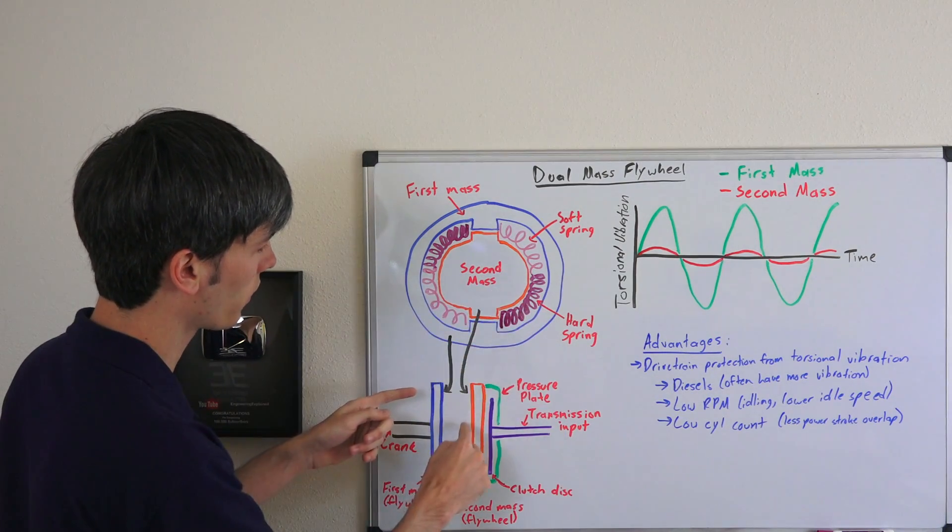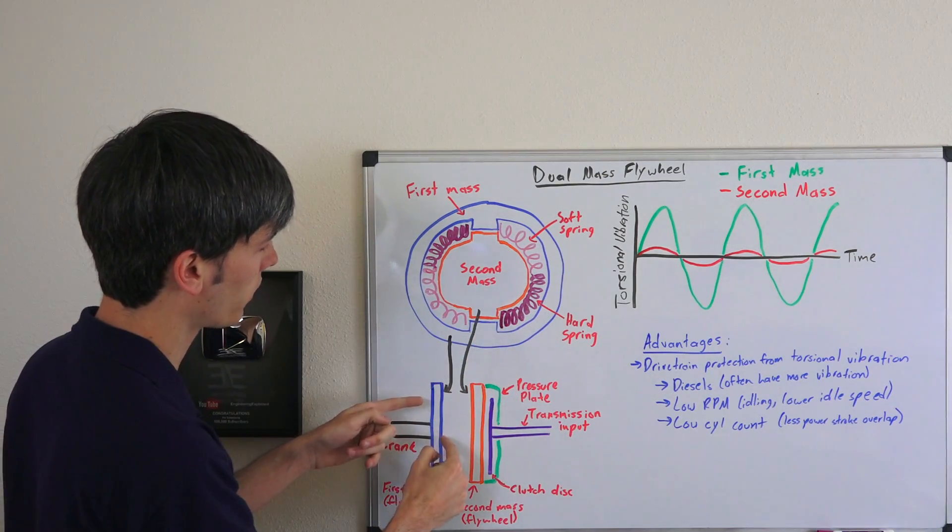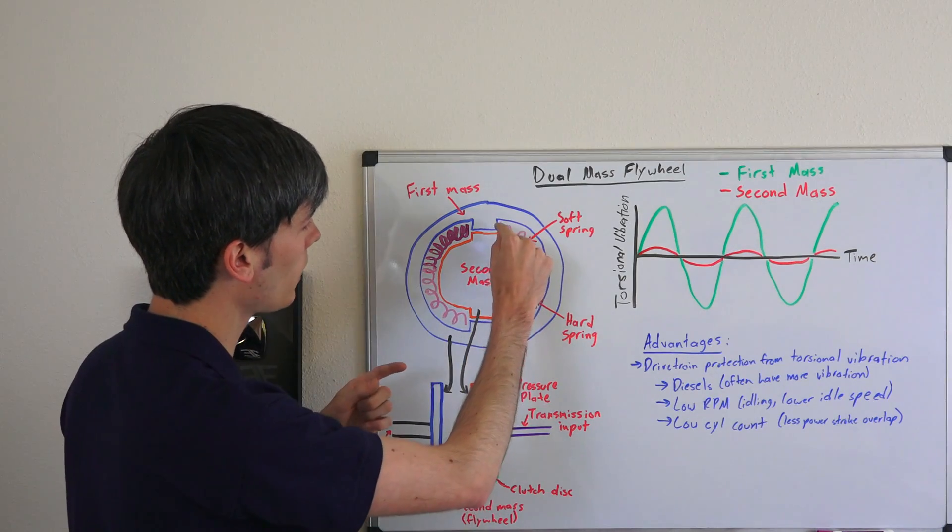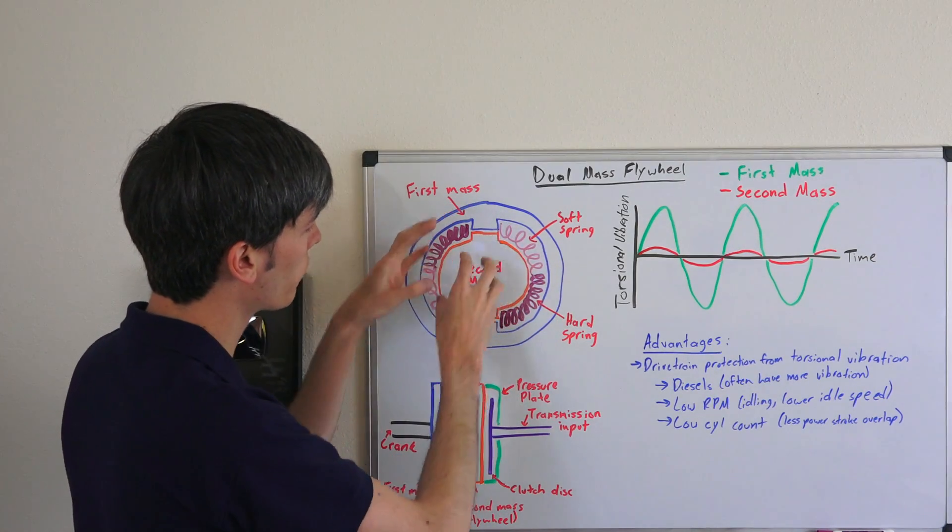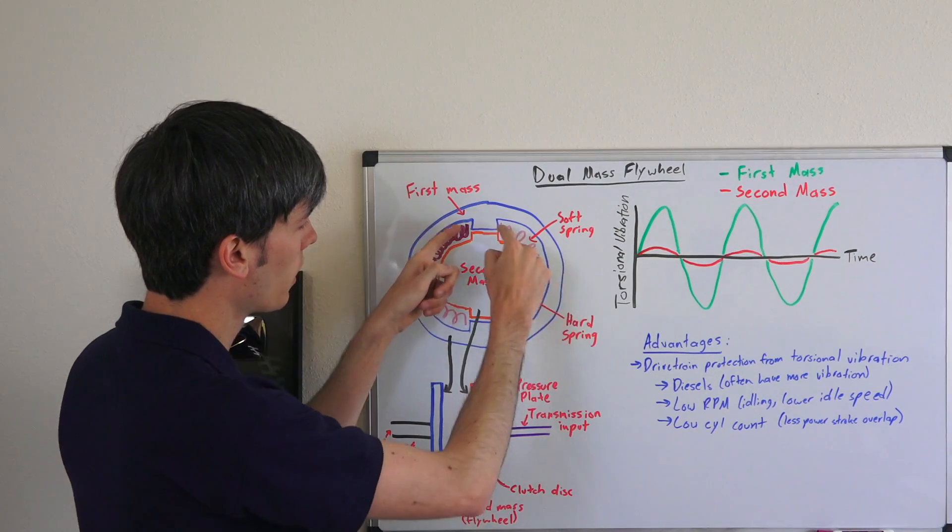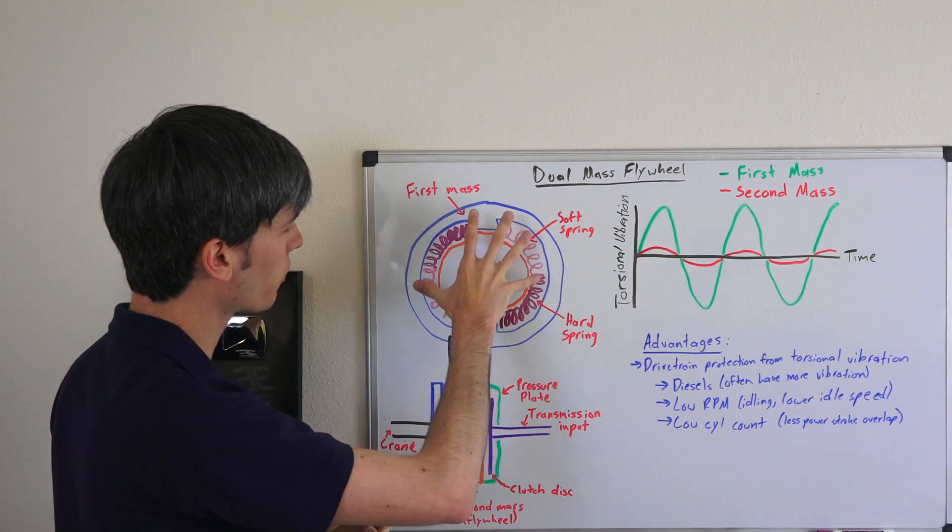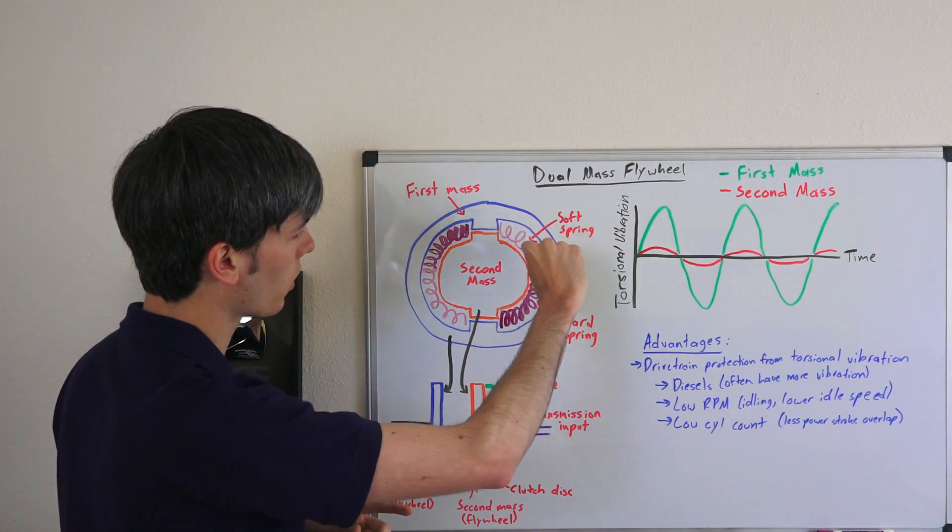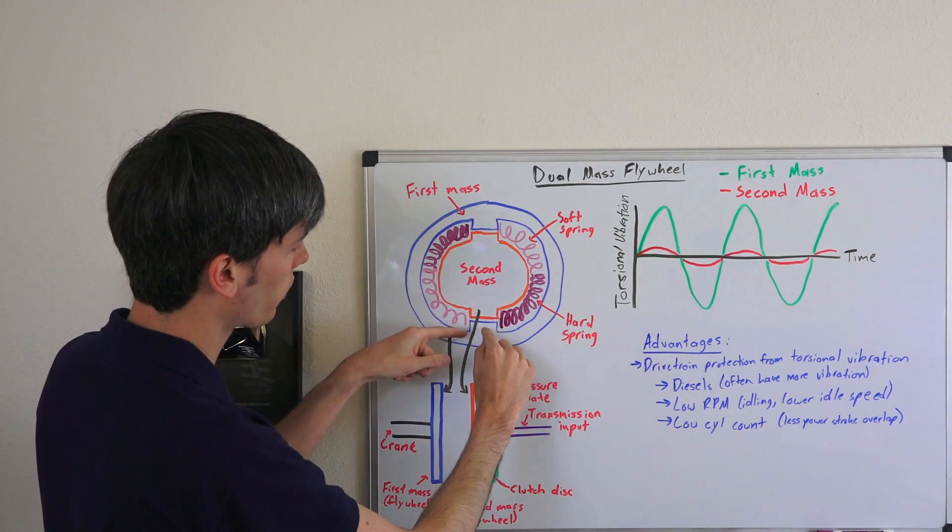This second mass will be on this side, the blue mass will be on this side, and as you can see they can rotate freely from one another but there's this spring within it.